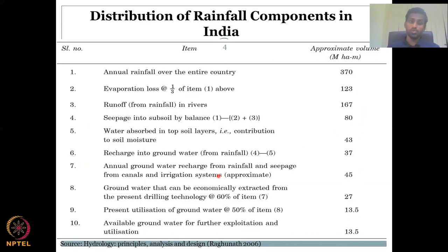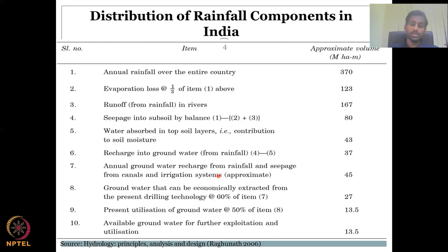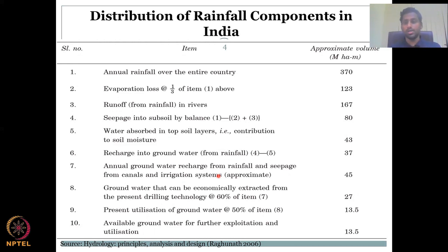Let's look at the distribution of rainfall components in India — an attempt to do a water balance — from Bhagwanath's book, 2006. The annual rainfall over the entire country for the time frame considered is 370 million hectare meters. Evaporation loss is one-third of that, approximately 123, which could be based on statistical information. Runoff from rainfall in rivers is 167, which is the remaining component. So if you add both — 123 plus 167 — you get 290.